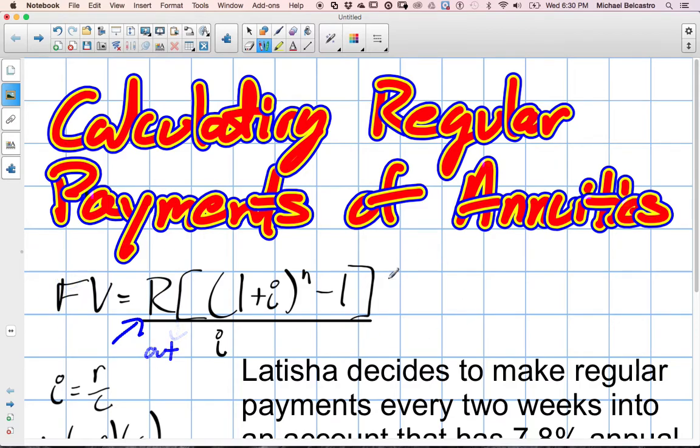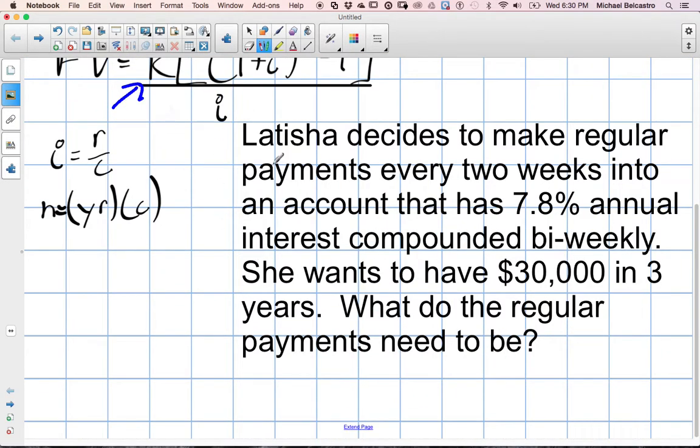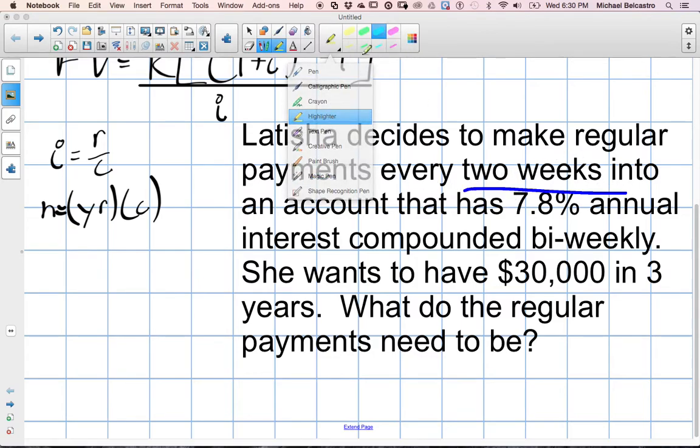So this is the future value, and of course we've given it away. But we'll read this question and talk about it. Latisha decides to make regular payments every two weeks into an account that has 7.8% annual interest compounded biweekly. That's a ton of information. She makes regular payments every two weeks. So if she's making two weeks, this is what's important here.